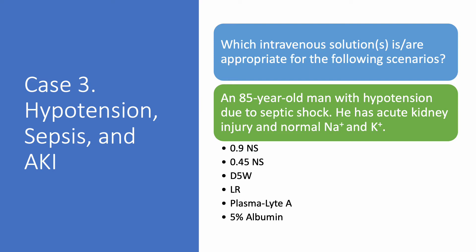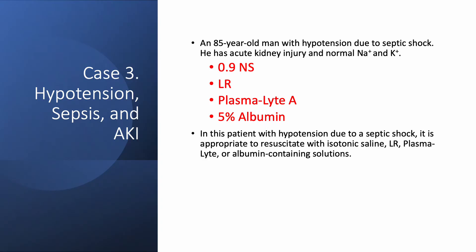Case number three: hypotension, sepsis, and acute kidney injury. We have an 85-year-old man with hypotension due to septic shock, acute kidney injury, and normal sodium and potassium. Most of the time you are going to use 0.9% normal saline or lactated Ringer. Plasma light A is not a bad option — it is more expensive and less available, but you can use it. 5% albumin is also not a bad option. The cheapest and most widely available options are 0.9% saline and lactated Ringer.